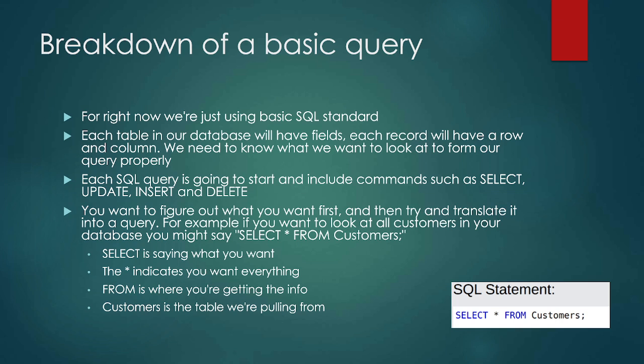A basic SQL query: if we're starting with just basic queries, each table in the database will have fields. Each record will have a row and a column. We have to know what we're looking for so we can form our query properly. SQL queries start with commands such as SELECT, UPDATE, INSERT, or DELETE. For example, 'I want to see everybody who's a customer' would be: SELECT * FROM customers. The star or splat means give me everything, and FROM tells us where we're pulling the data.